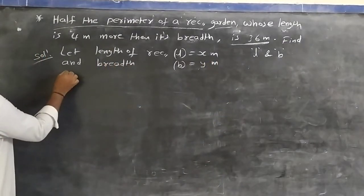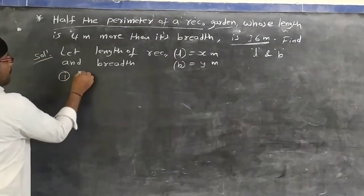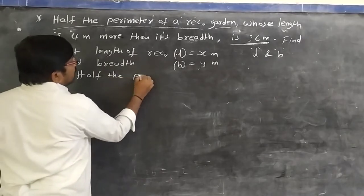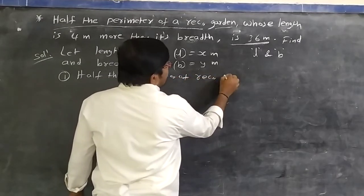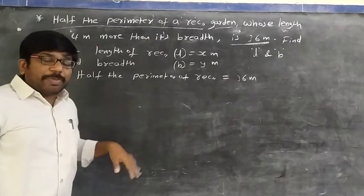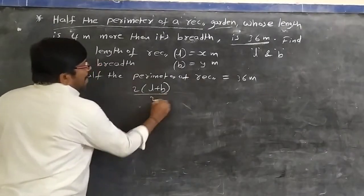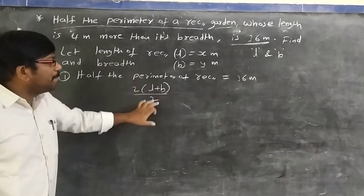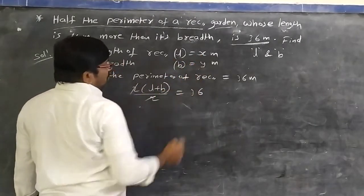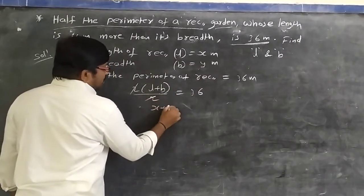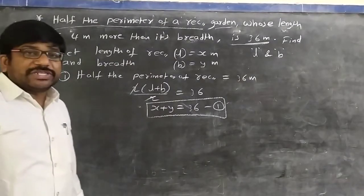The first condition: half the perimeter of the rectangular garden is 36 meters. Half the perimeter = 2(L + B)/2 = L + B = 36. Substituting L = x and B = y: x + y = 36. That is equation 1.